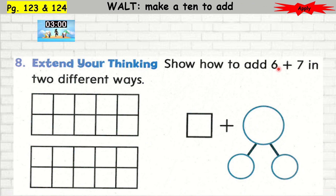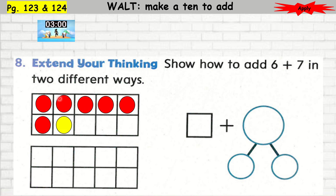Extend your thinking: show how to add 6 plus 7 in two different ways. So we can use the 10-frame. 1, 2, 3, 4, 5, 6. And then add 7 more: 1, 2, 3, 4, 5, 6, 7. And you would get 10 plus 3, which is 13.